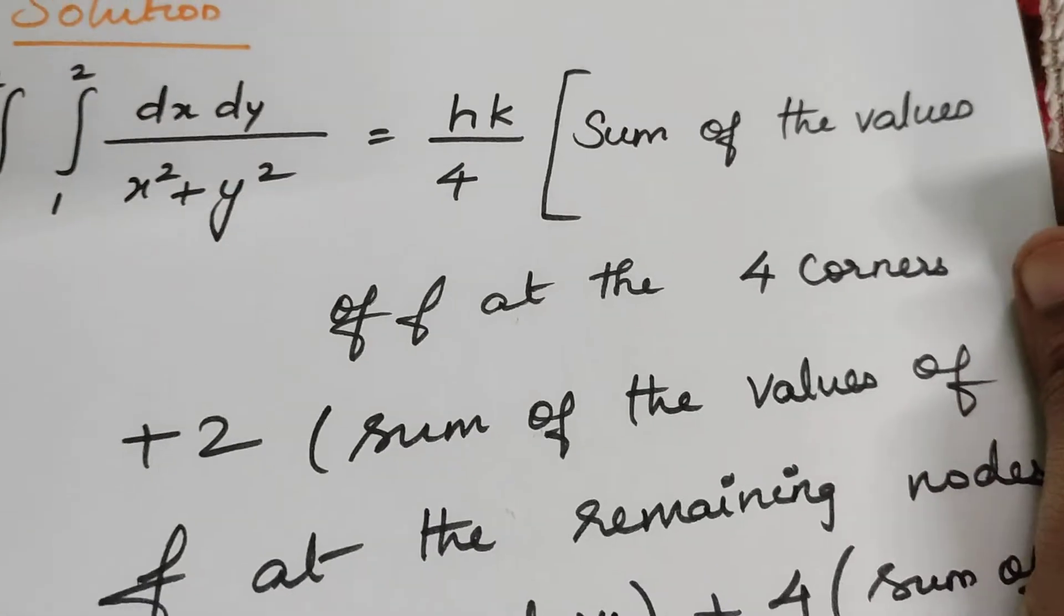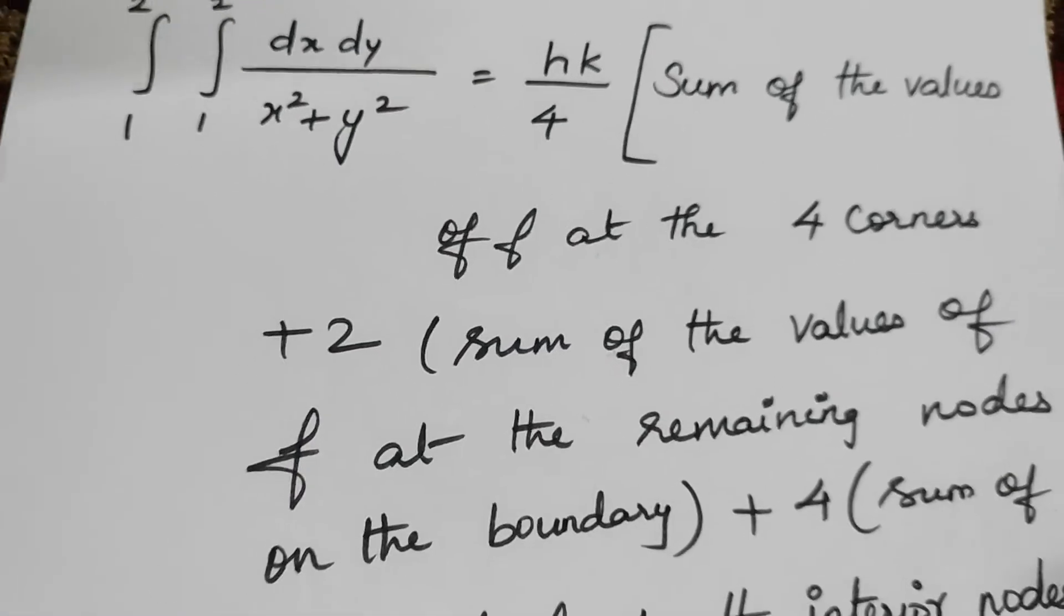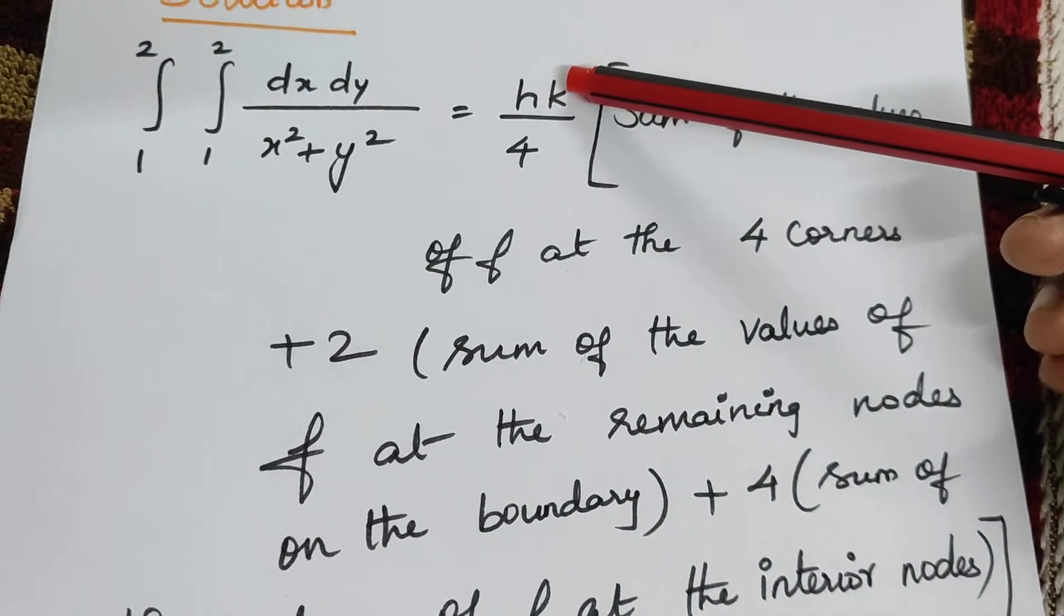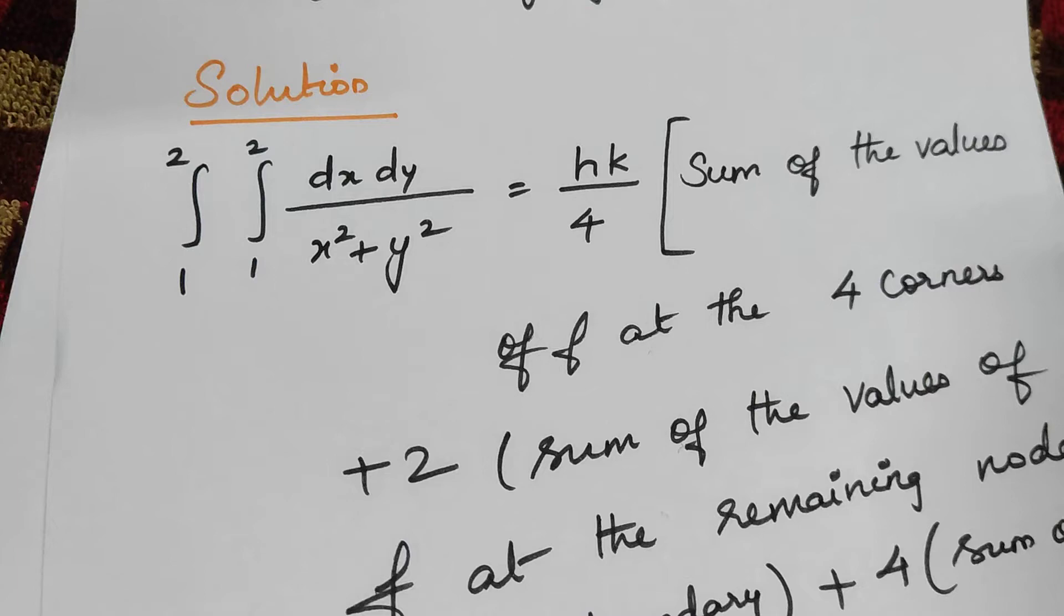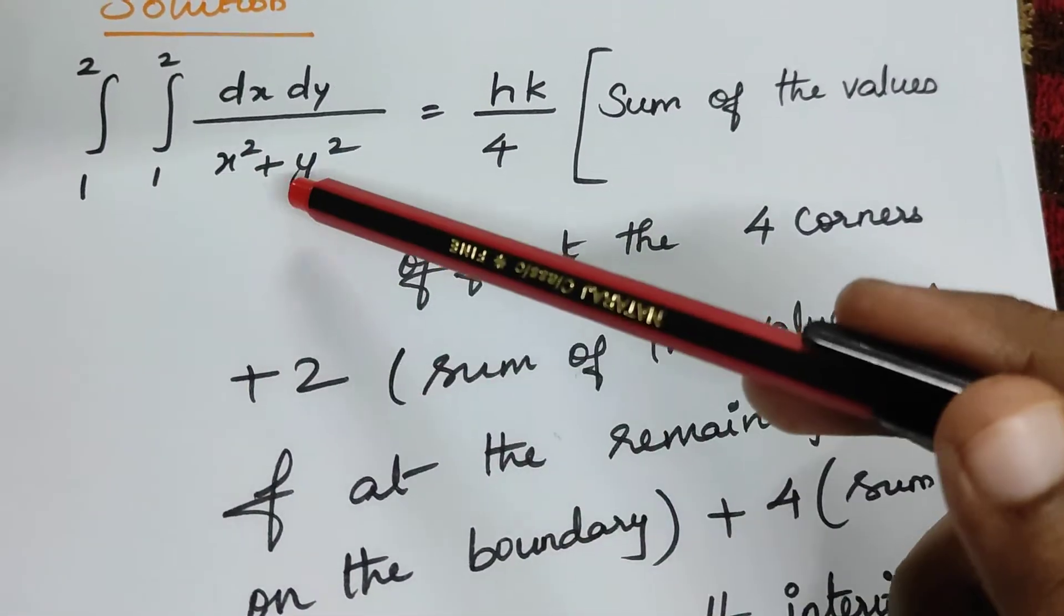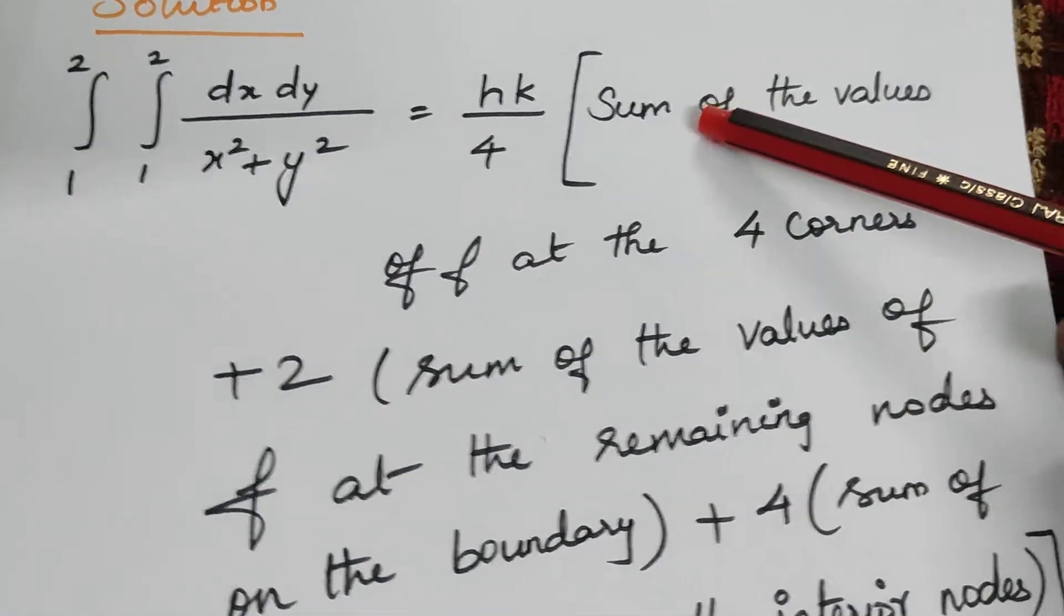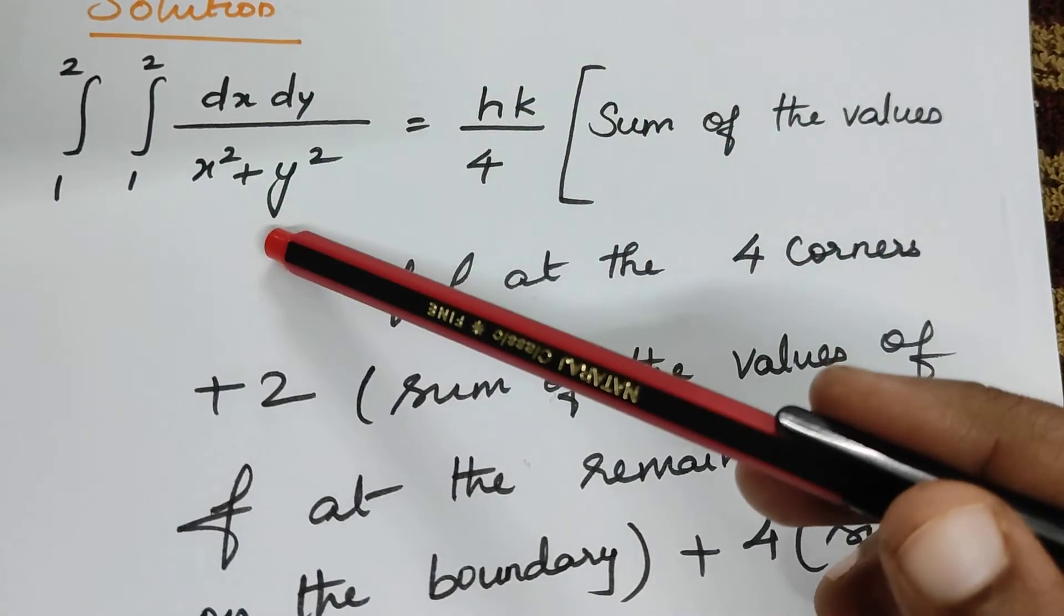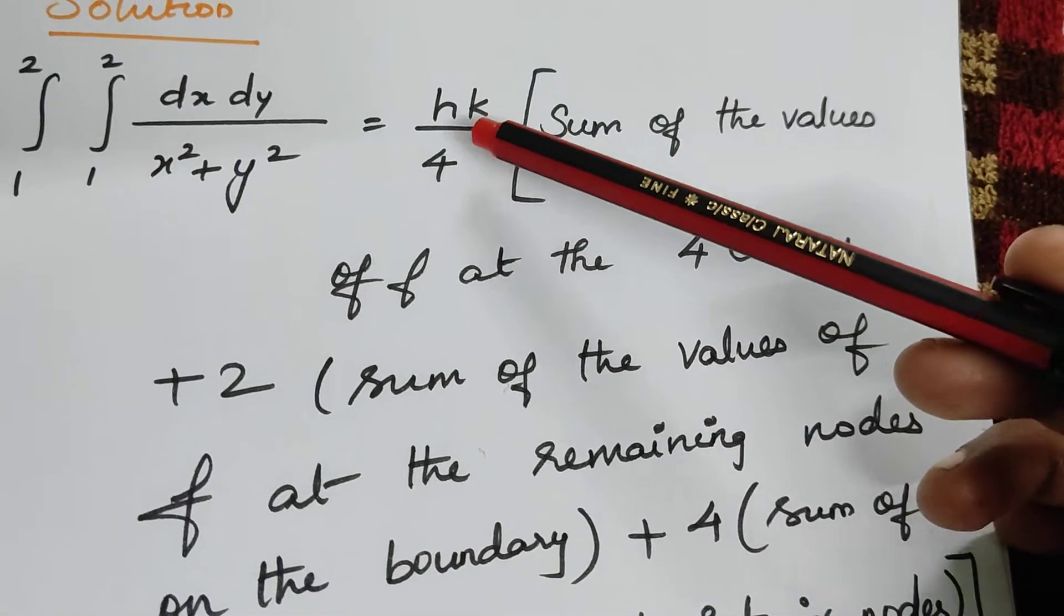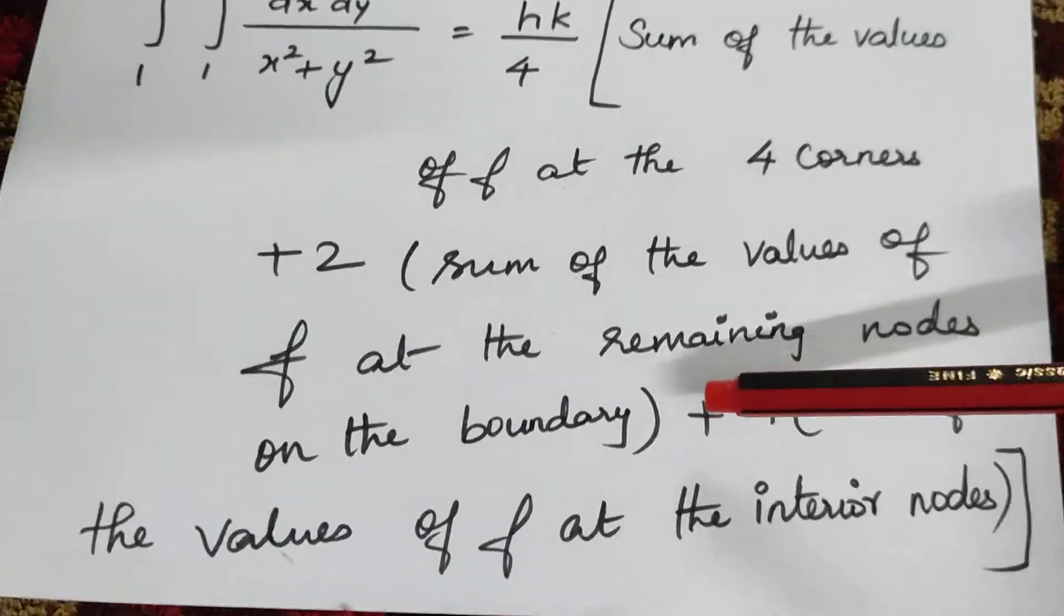First let us get into the formula for the double integration using trapezoidal rule. The formula is h into k divided by 4. You can write the given problem on the left hand side or the double integral of f of x comma y dx dy. Both carry the same meaning.